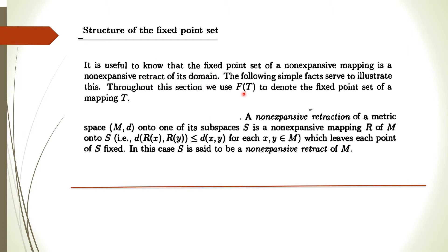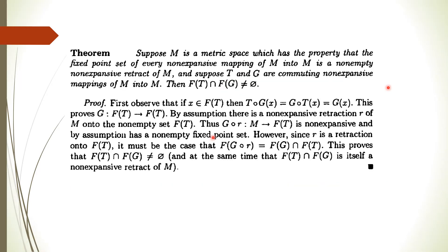Throughout this section, we will denote FT as the fixed point set of the mapping T. Now, although this is a theorem: suppose M is a metric space with the property that the fixed point set of every non-expansive mapping of M into M is a non-empty non-expansive retract of M. And suppose T and G are commuting non-expansive mappings of M into M. Then the set of fixed points of T intersected with the set of fixed points of G is non-empty.